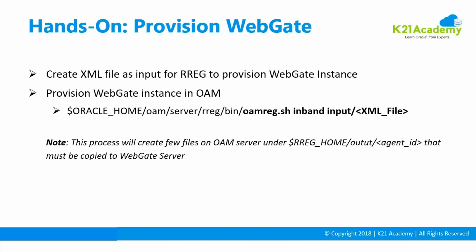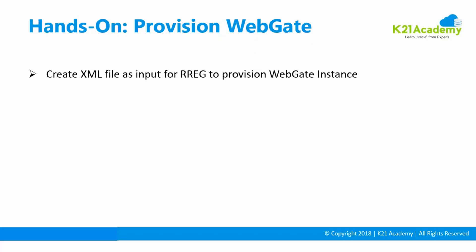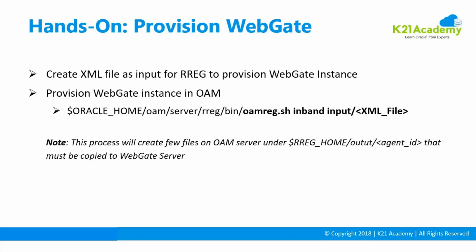Then we are going to run RREG. We'll create an XML file on the server on the Oracle Access Manager side. There are pre-configured XML files that come with RREG - Remote Registration Utility - on the OAM server. We copy that and run the command oamreg.sh on the Oracle Access Manager side, pass the inbound flag and the input XML file with all the parameters. It will create an output directory under the RREG Remote Registration Home, and under the agent name directory it will generate all the artifacts.